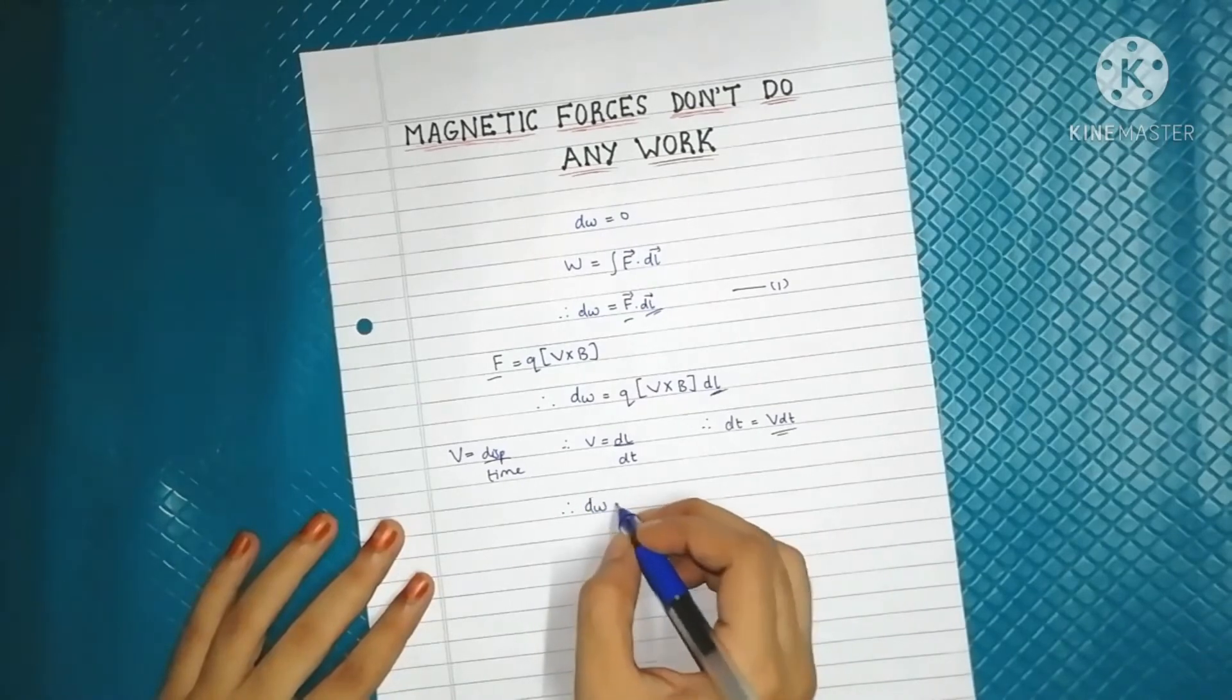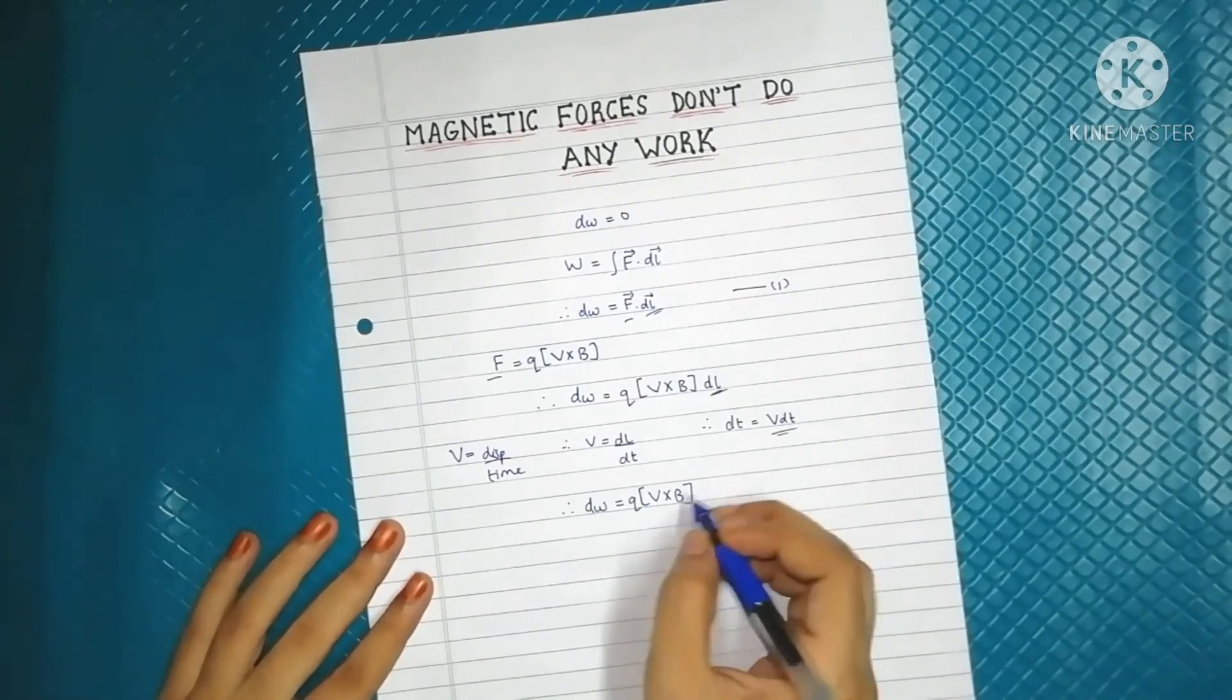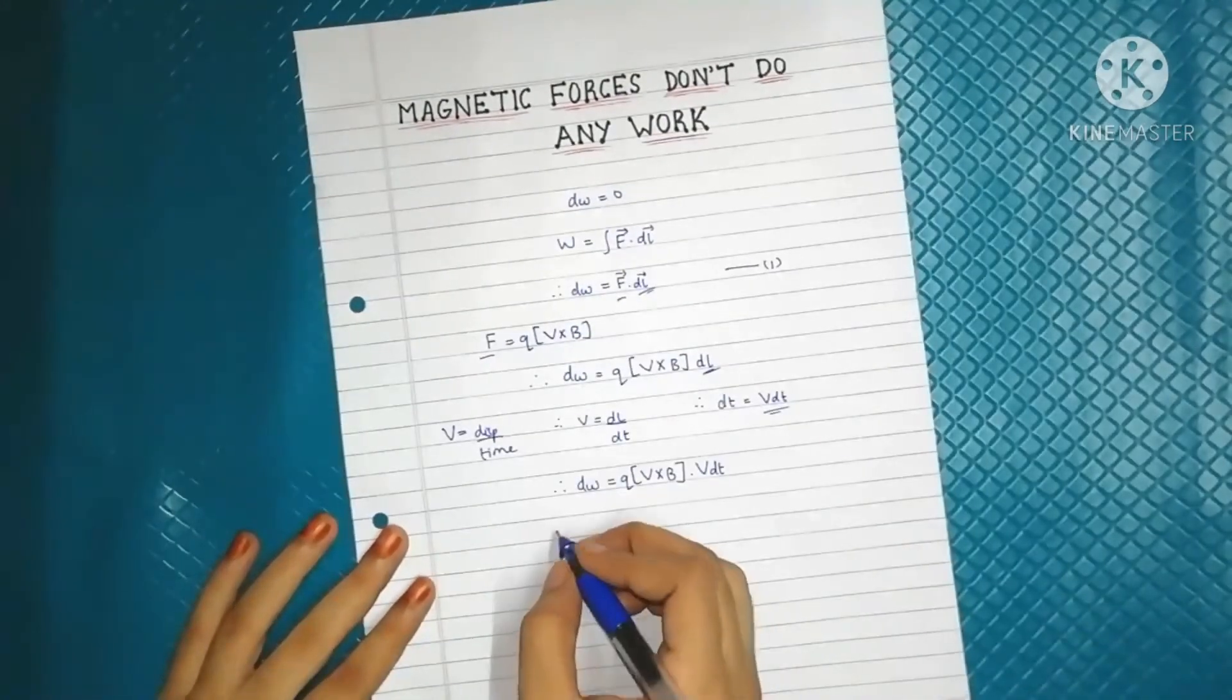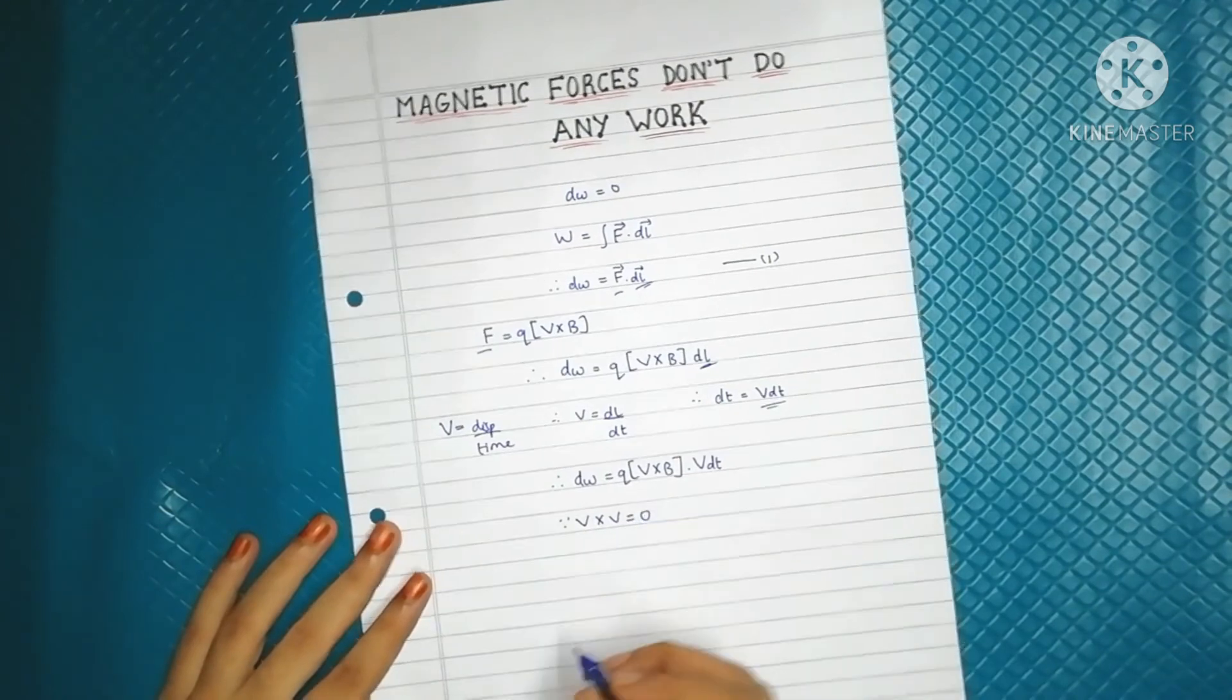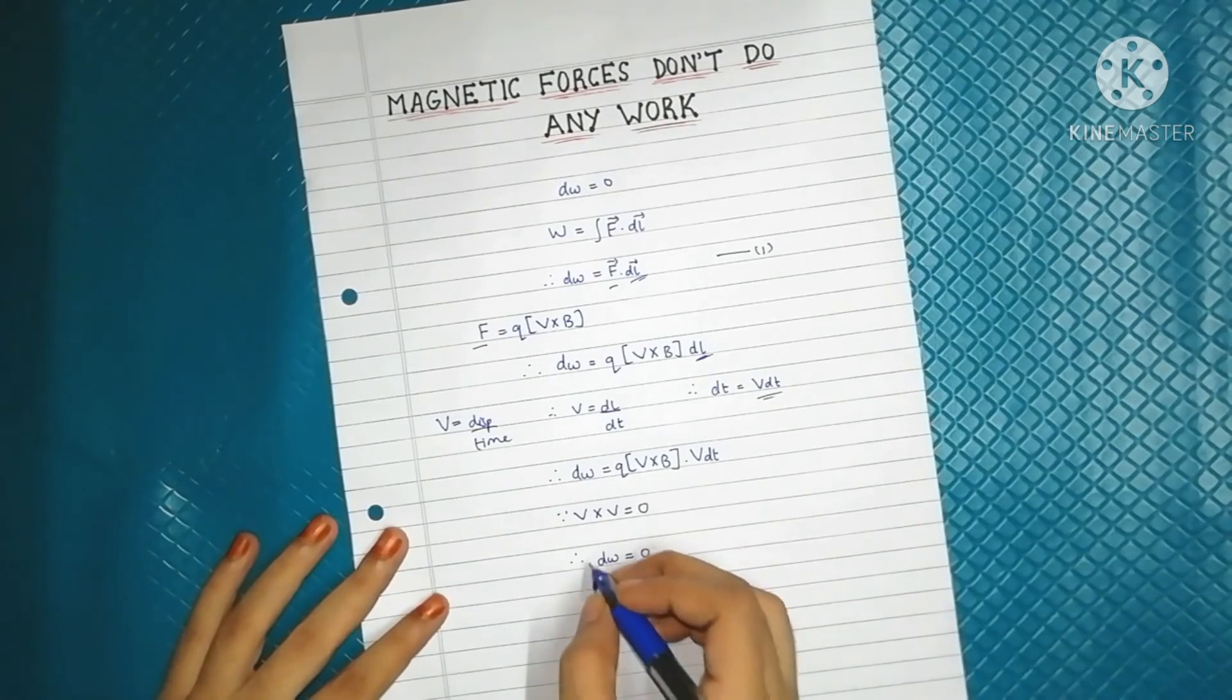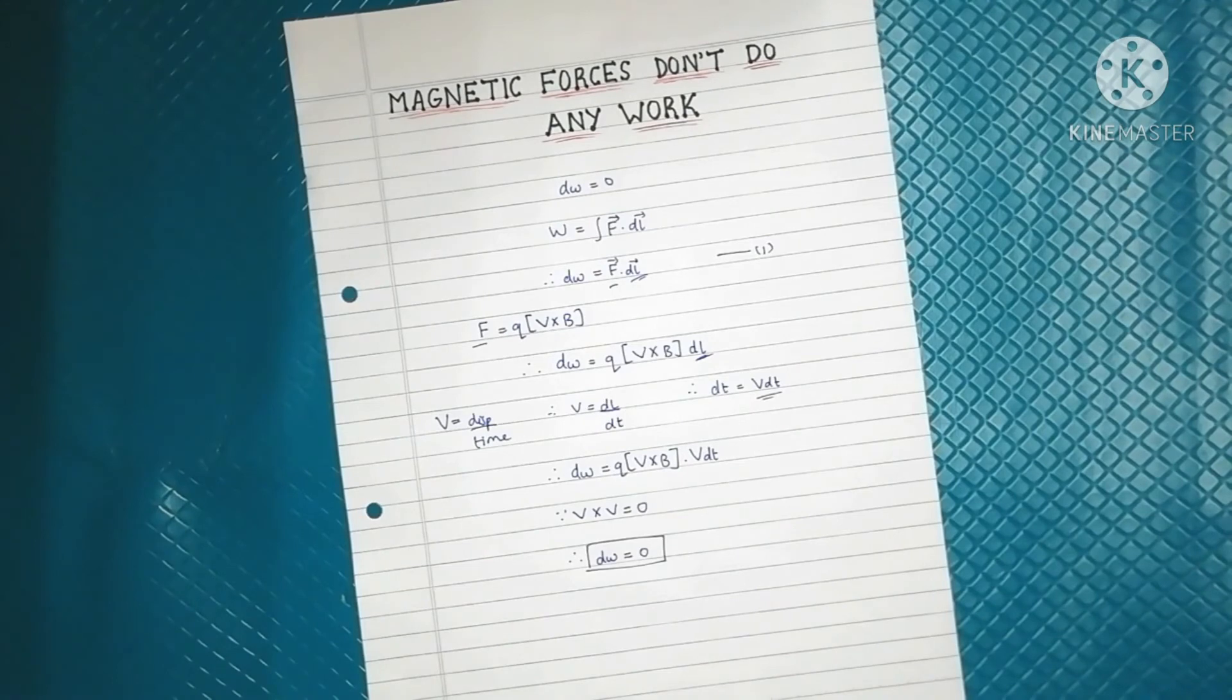Therefore dW is equal to q into v cross B v dt. Now since the cross product of a vector with itself is equal to zero, thus the work done by magnetic forces is zero. So magnetic forces do not do any work.